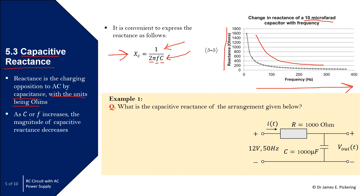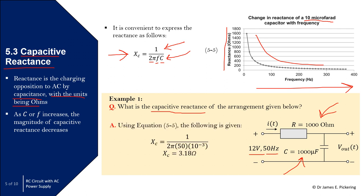Looking at an example: what is the capacitive reactance for the arrangement below, where we have a resistor of 1000 ohms, a capacitor of 1000 microfarad (10⁻⁶), and 12 volts supplied at a frequency of 50 hertz? Using the equation, X_C equals 1 over (2π × 50 × 1000 × 10⁻³), which gives us a capacitive reactance value of 3.18 ohms.